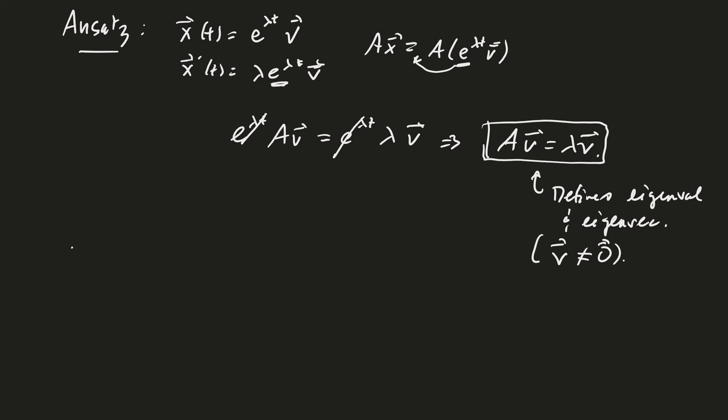And so now we need to solve, so to find lambda and v, we go through our solution technique for finding eigenvalues and eigenvectors. And I see I'm already at the 10, 11-minute mark, so I'm going to stop here. And in the next video, we'll talk about how to find eigenvectors and eigenvalues.